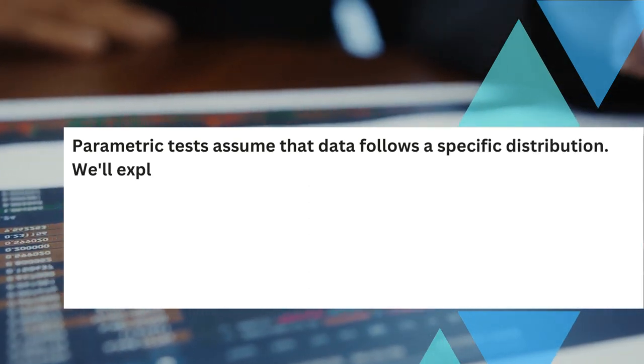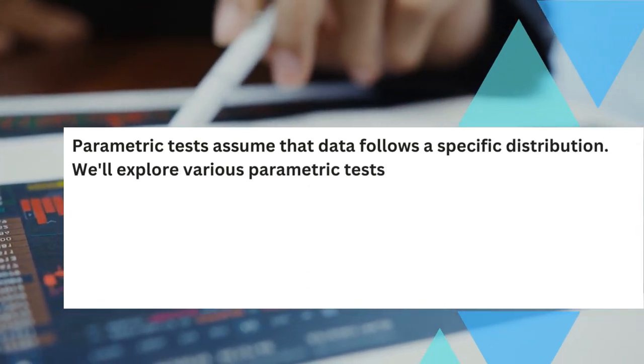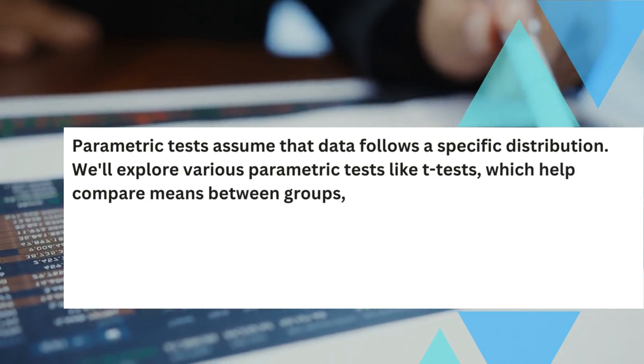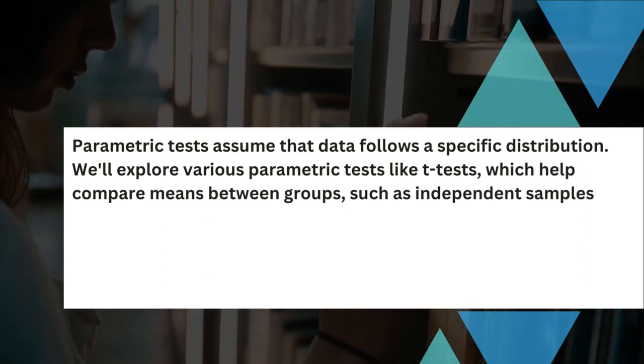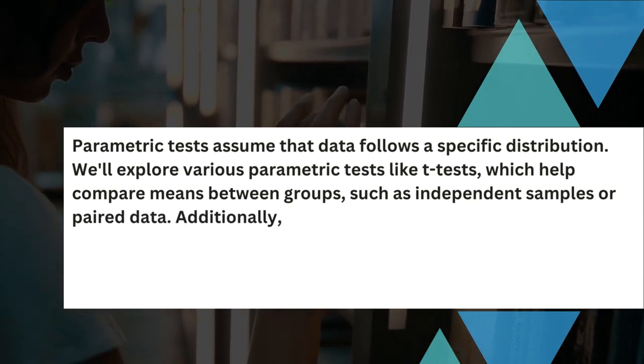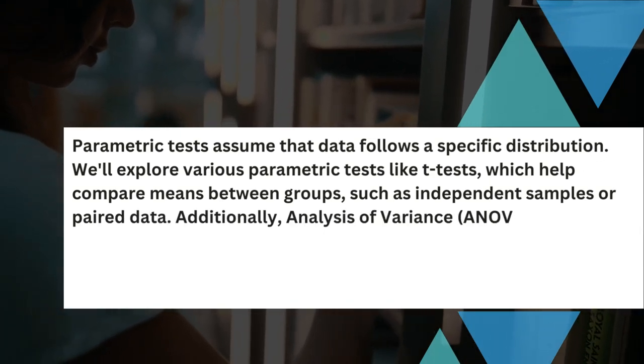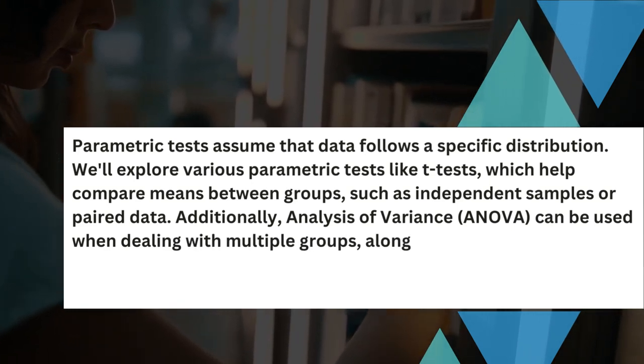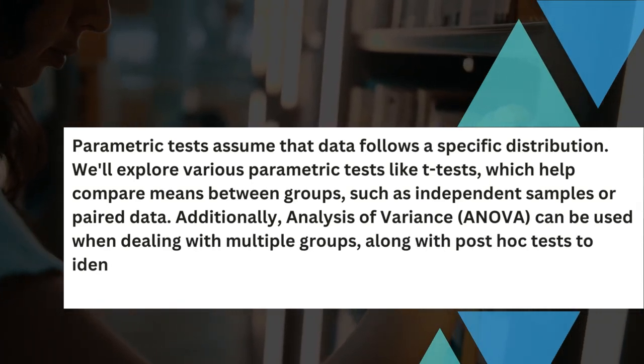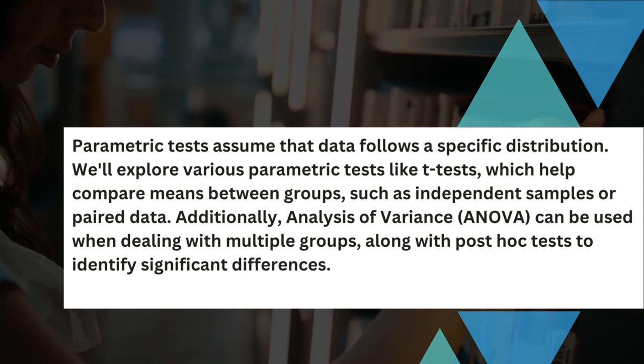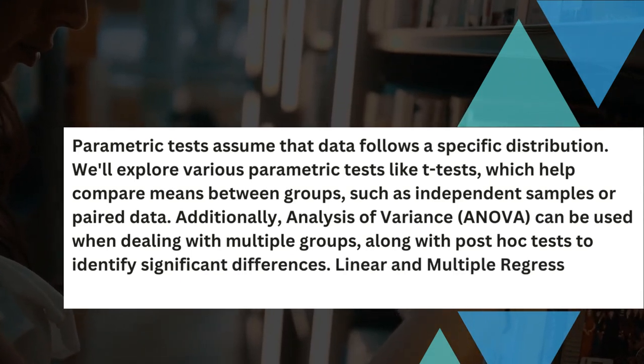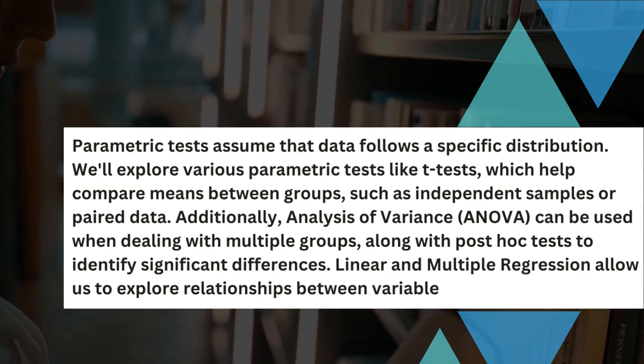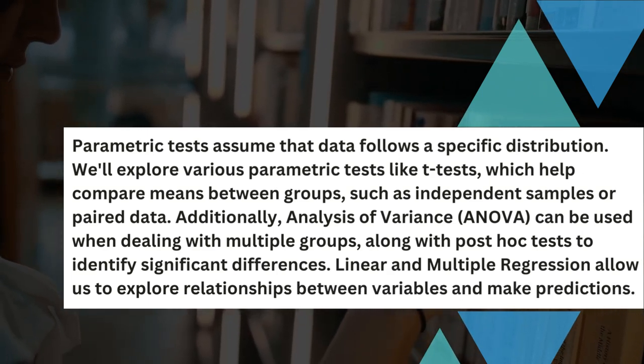We'll explore various parametric tests like t-tests, which help compare means between groups using methods such as independent samples or paired data. Additionally, analysis of variance, ANOVA, can be used when dealing with multiple groups, along with post-hoc tests to identify significant differences. Linear and multiple regression allow us to explore relationships between variables and make predictions.